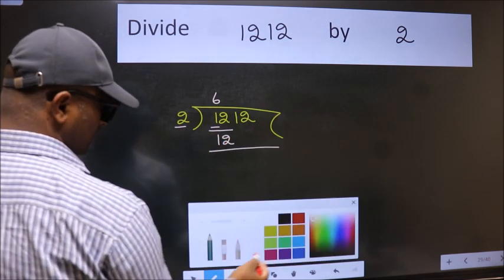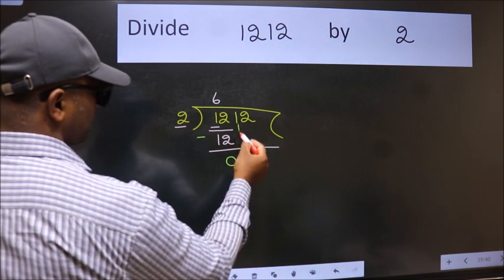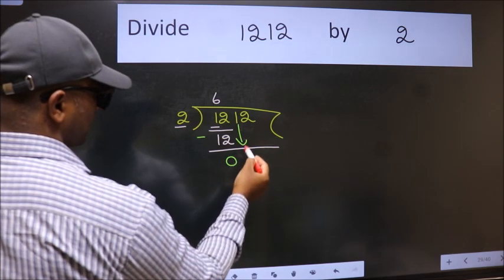Now we should subtract. We get 0. After this, bring down the beside number. So 1 down.